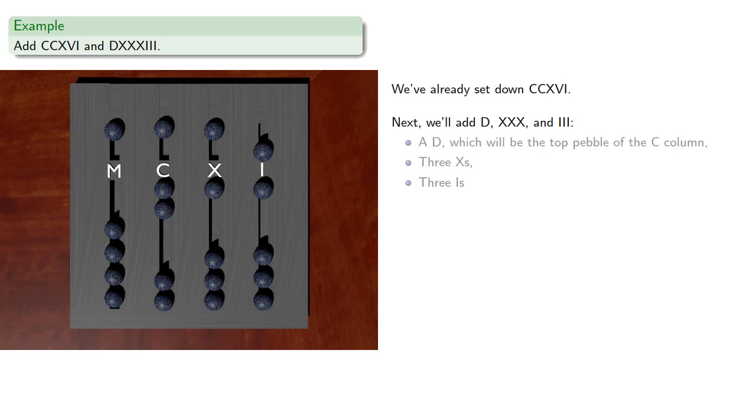So a D is going to correspond to the top pebble of the C column. Three X's, we can add those. Three I's, we can also add those.